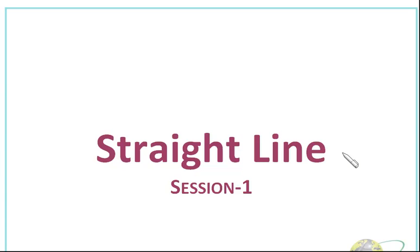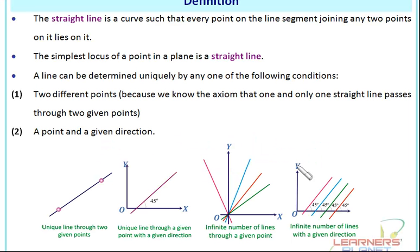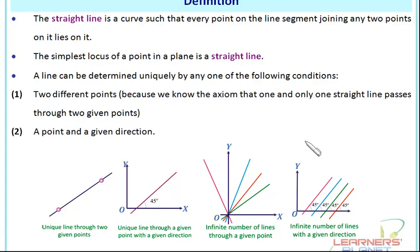So here we start with straight lines. Let's begin with the definition. The straight line is a curve such that every point on the line segment joining any two points on it lies on it. Precisely, it is a combination of so many curves, and the curves are so small that we feel them as a straight line. The simplest locus of a point in a plane is a straight line.